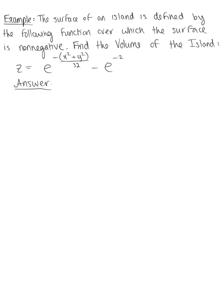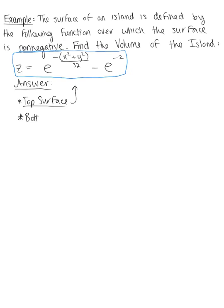We're asked to find the volume of an island where the surface is defined by this function over the region for which it's non-negative. This non-negative region implies that the upper bound, or top surface, is the given function, and the bottom surface, since it's non-negative, must be the xy-plane.